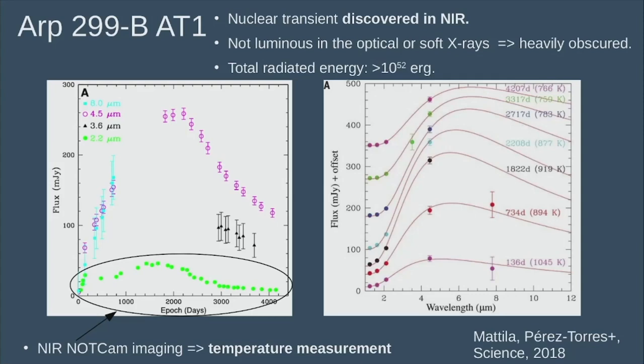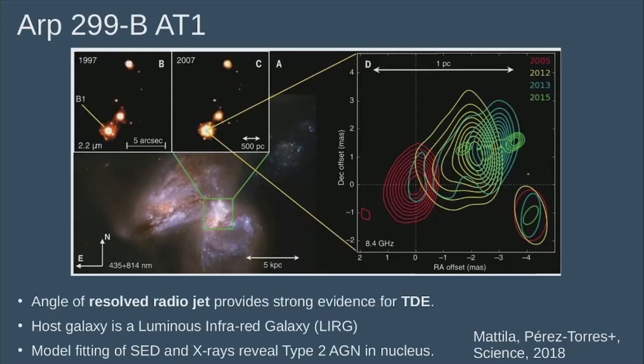By fitting blackbodies to what we see, we get temperatures, scales, and can measure the total radiated energy - about 10^52 ergs, which is in the realm of what we expect to see from a TDE.